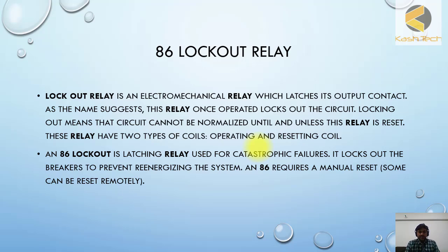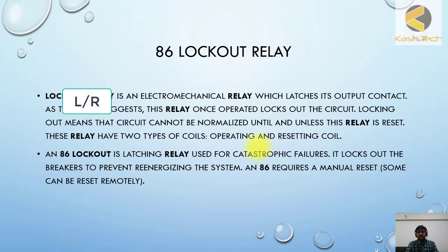These relays have two types of coils: operating coils and resetting coils. A lockout relay is a latching relay used for catastrophic failures. It locks out the breaker to prevent energizing the system, and code 86 requires a manual reset or it can also be electrically reset from remote. The lockout relay can be used to trip the breaker while simultaneously locking out the closing pulse.